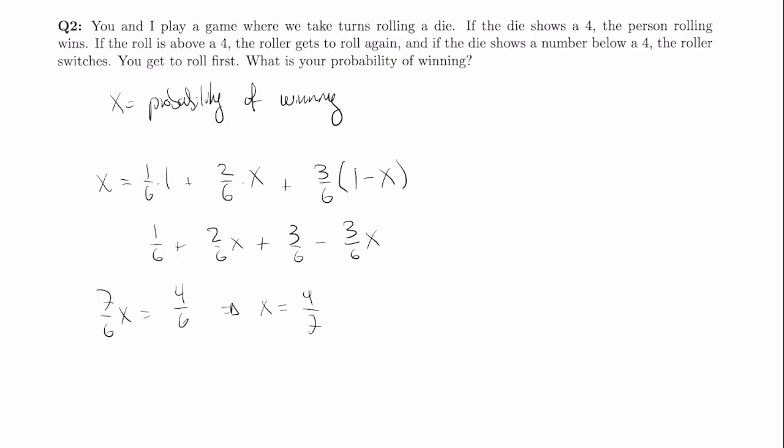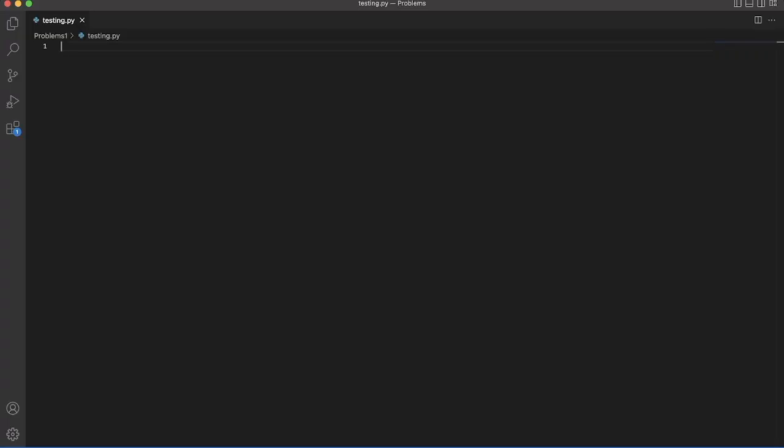So we can see that the probability of winning was the same for this game and the last game — both came out to four over seven. Let's try to simulate this game as well.